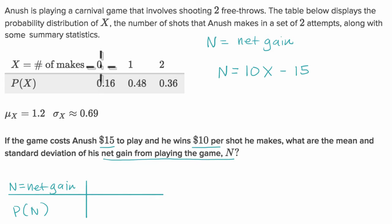The outcome that corresponds to him making zero shots, well, that would be 10 times zero minus 15. That would be a net gain of negative 15. And it would have the same probability, 0.16.